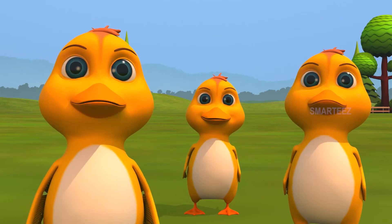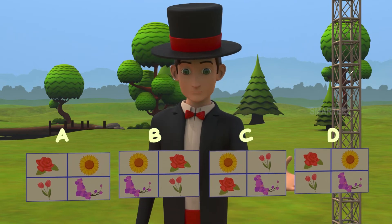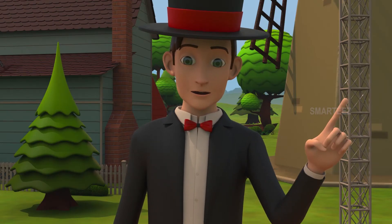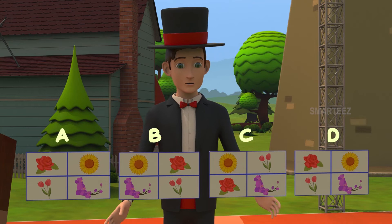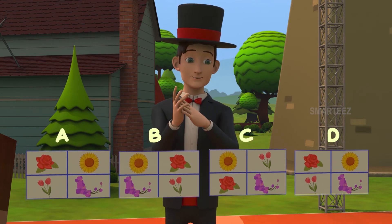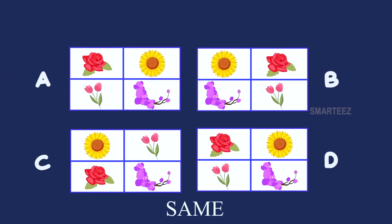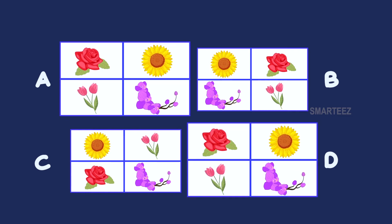Is it A and B? No, it's not. Try again. Is it B and C? No, that's not right either. Try again. It's A and D. You got that right. Let's give a big round of applause. Let's look at the two pictures which are the same. You can see the four flowers — red rose, sunflower, pink tulip and purple orchid — in the same order between these two pictures A and D. So those are the only two pictures that are exactly the same. We call them identical.